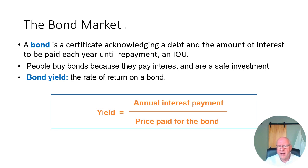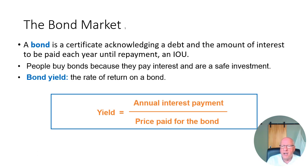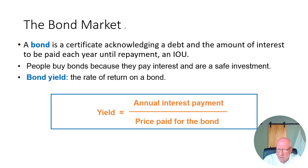Now let's look at what impact buying and selling bonds has on the bond market and on something called yield. A bond, or security, is a certificate acknowledging a debt and the amount of interest to be paid on it every year until repayment — also known as an IOU. People can buy and sell these bonds. Just like a car note is evidence of a debt with monthly payments, a bond is a tradeable debt certificate whose value can be bought and sold on the open market.